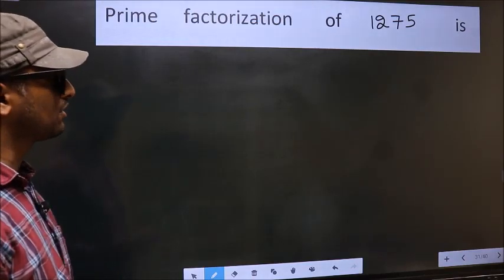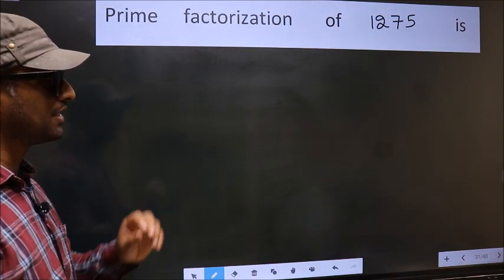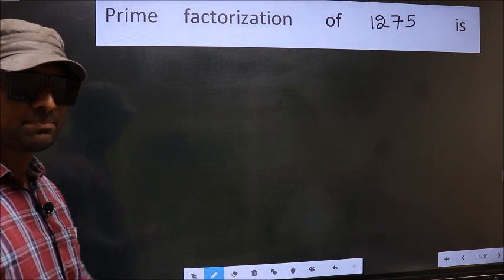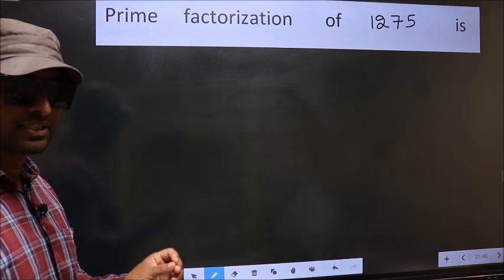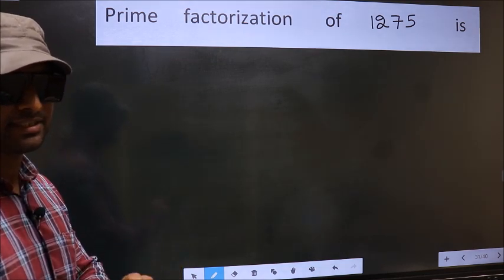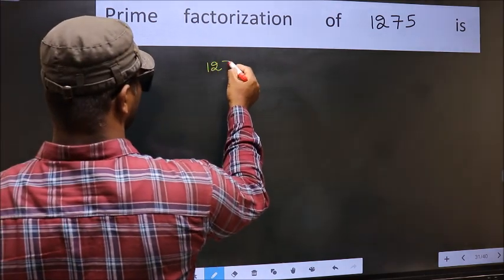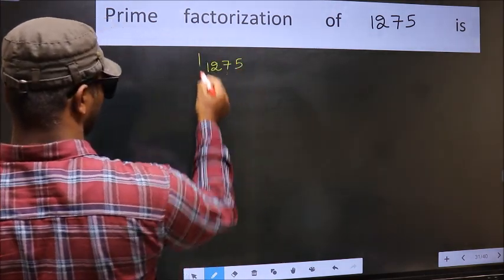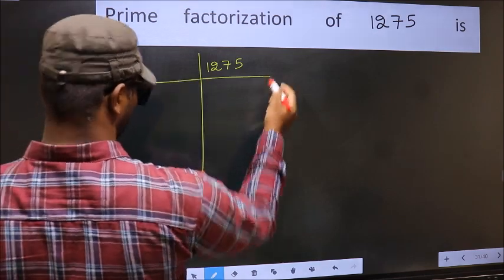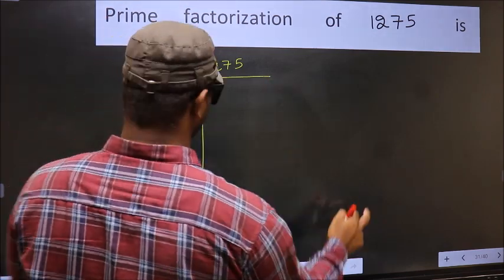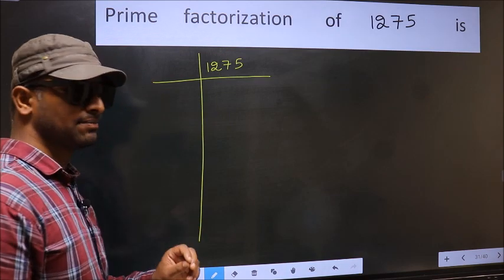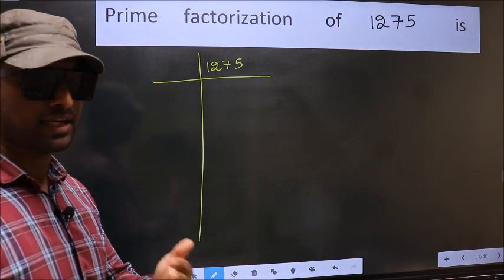Prime factorization of 1275. To do the prime factorization, first we should frame it in this way. 1275. This is your step 1. Next.